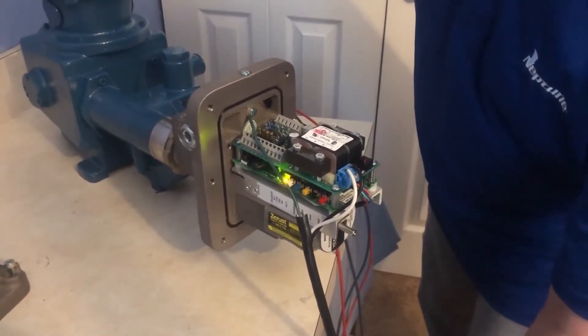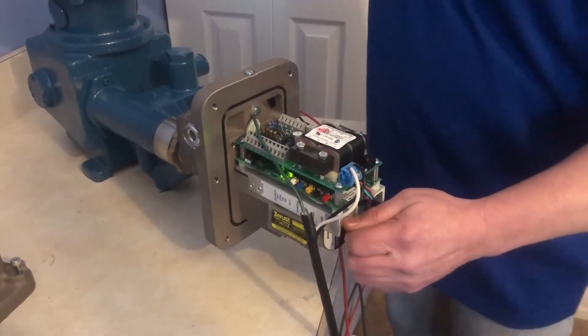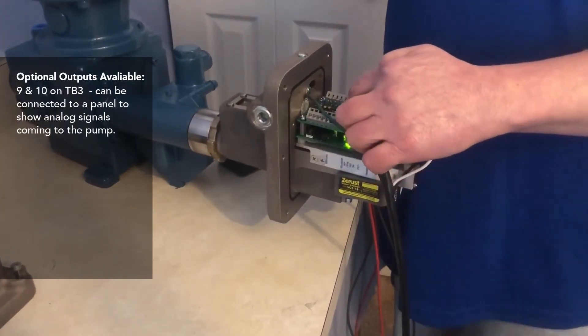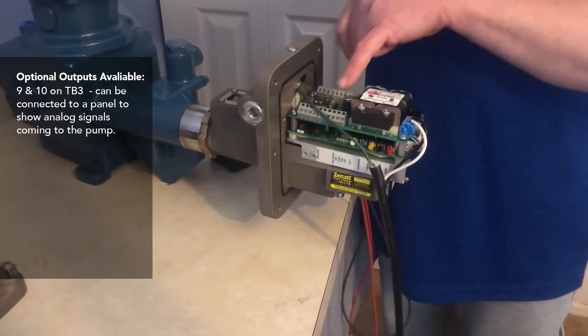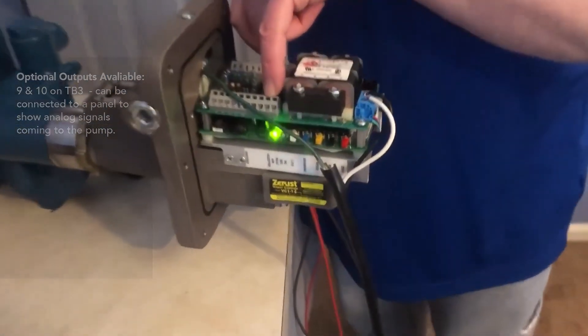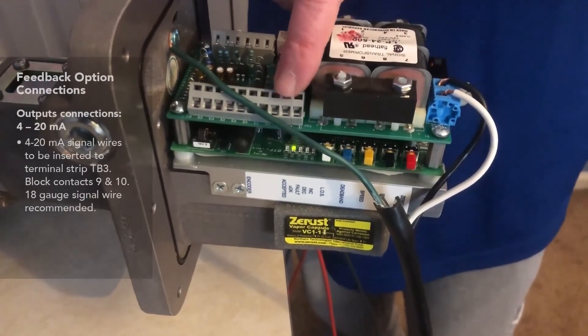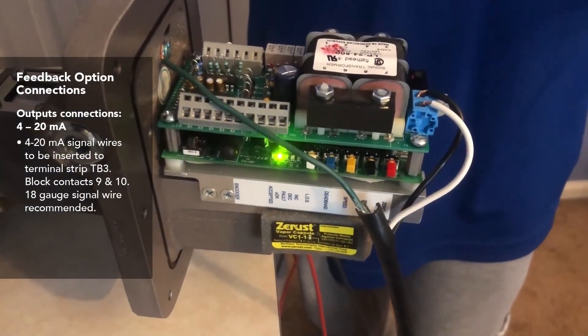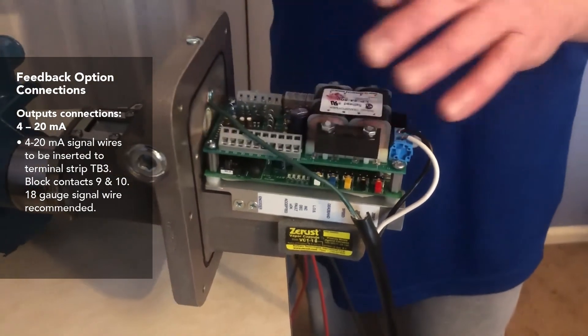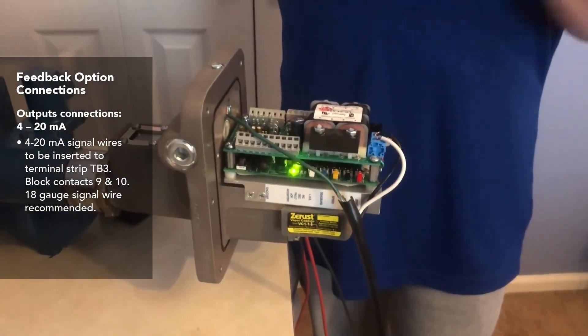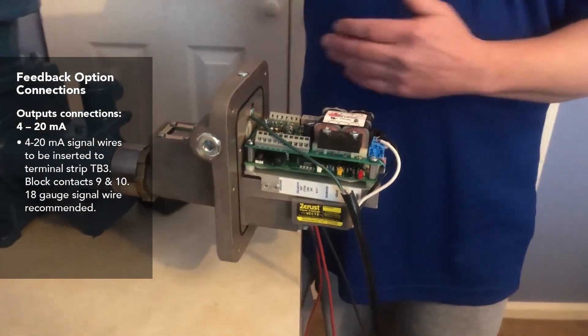There are optional outputs to this controller on 9 and 10 on TB3. This output signal can be put to a SCADA system or a panel of some sort, telling you what your analog signal is coming into the pump.